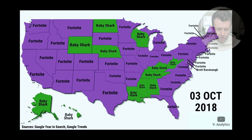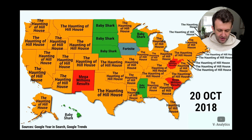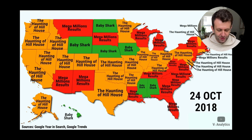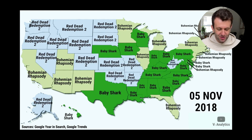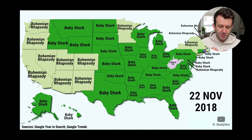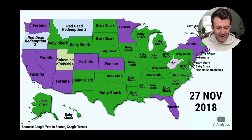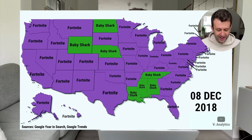So Fortnite everywhere, Baby Shark a little bit, obviously the Haunting of Hill House and Baby Shark, Red Dead Redemption, Bohemian Rhapsody has obviously just been released, Baby Shark just takes over and so does Fortnite again. It goes on for a while so I'll put the link in the description. Great job, user v1 analytics.